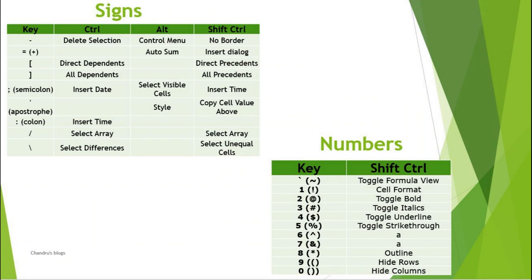Shortcuts using signs like equals, semicolon, apostrophe, colon, and numbers from 1 to 0. All the signs and numbers have their unique shortcuts.